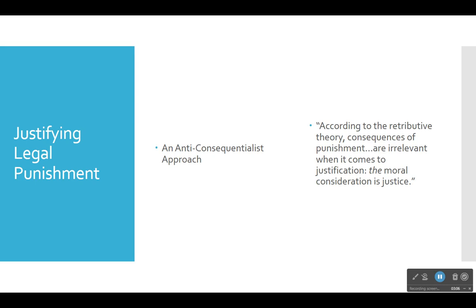Utilitarians and consequentialists take the view that a policy is morally justified if it will maximize good consequences — if it will bring about the best overall balance of happiness over unhappiness, or at least minimize painful unhappy consequences. As a matter of fact, if you think back to chapter 9, that first article on utilitarianism in the Fundamentals of Ethics, Schafer-Landau uses this specific topic as a way of introducing the utilitarian theory in chapters 9 and 10.